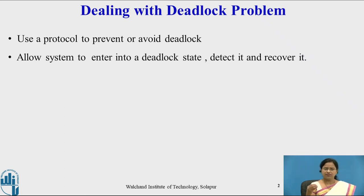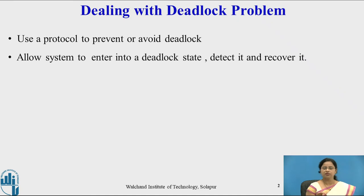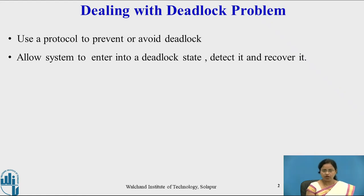Second, if we don't have deadlock prevention or deadlock avoidance, then we allow the system to enter into a deadlock state. If the system enters into the deadlock state, then the system has to detect why and how it occurred. Once detection is done, recover the system from the deadlock.